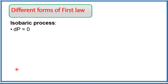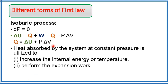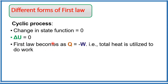In an isobaric process, there is no change in pressure. According to the first law ΔU = Q + W, and substituting W = −PΔV gives Q_P = ΔU + PΔV. Here the absorbed heat Q is utilized in two ways: one to increase the internal energy of the system (which corresponds to a temperature increase), and the other to perform expansion work PΔV.